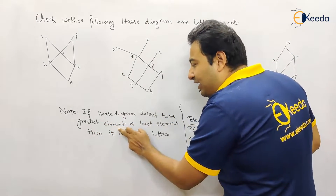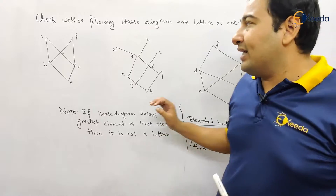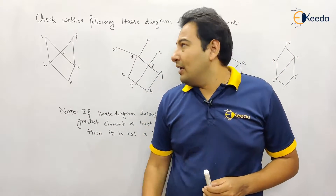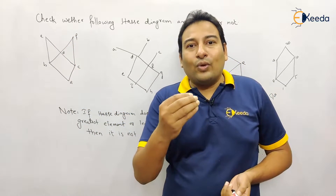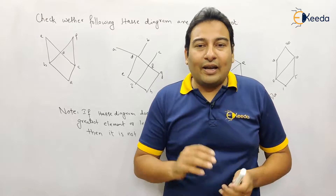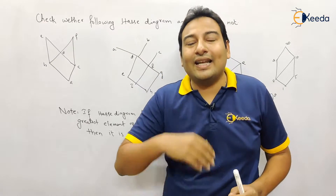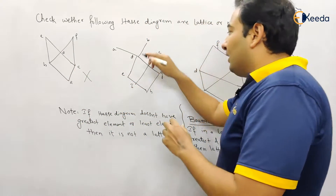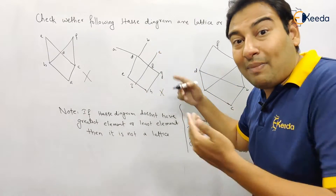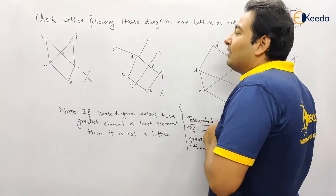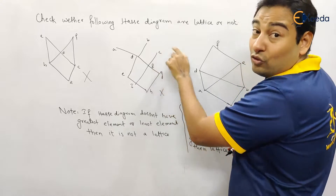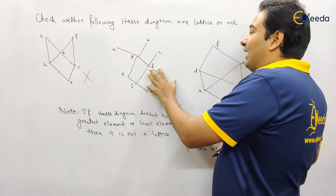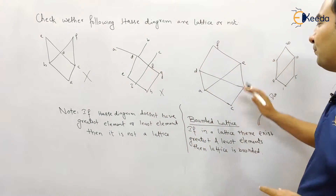So the point is: if a Hasse diagram does not have a greatest element or least element, then it is not a lattice. If you get this question in your MCQs or GATE exam, a diagram is given — you just need to check whether there is a greatest element or least element. If not present, it cannot be a lattice. Now, what are the maximal elements here? The maximal elements are A, B, and C. But there is no greatest element, therefore it's not a lattice.